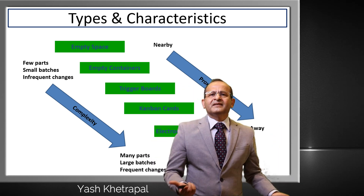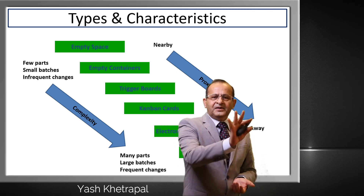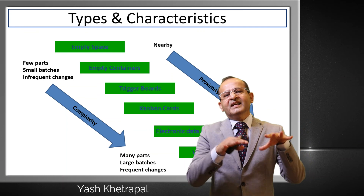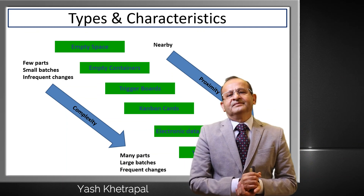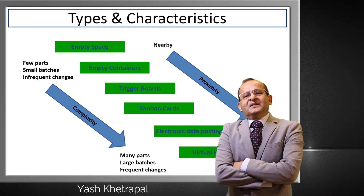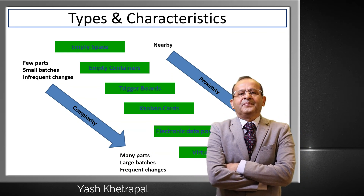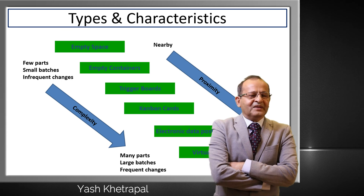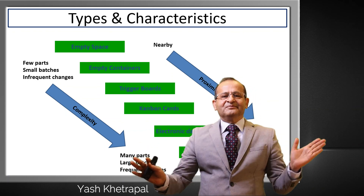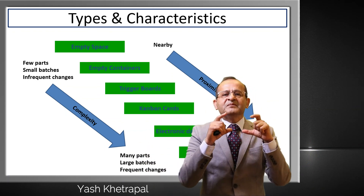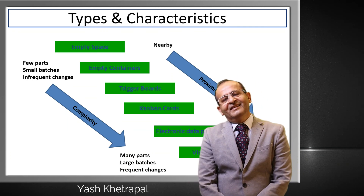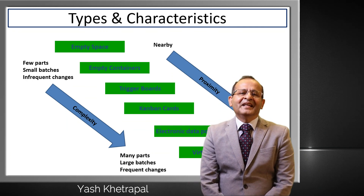Next is virtual Kanban — very interesting. I have implemented this in certain places. You put a CCTV camera on your shop floor and the output is available to the supplier on a real-time basis. If the stock level is low, the supplier makes a supply. If the stock level is high, the supplier does not need to supply. Information is conveyed in real time with no need to send any data.